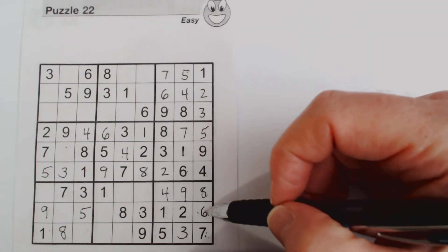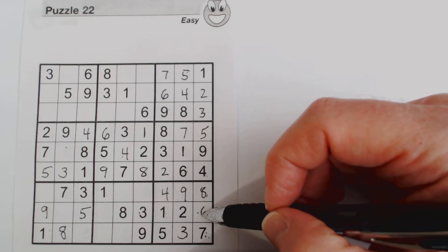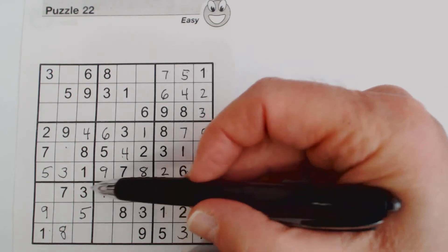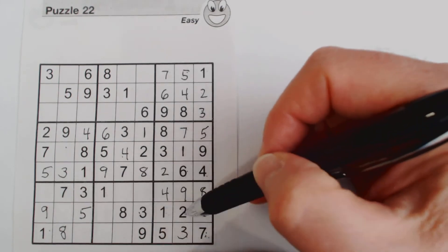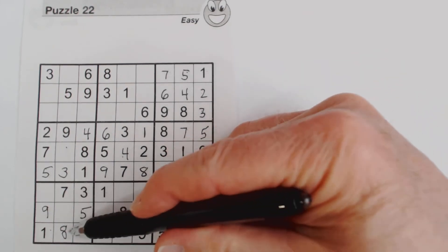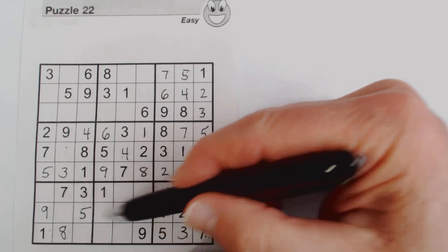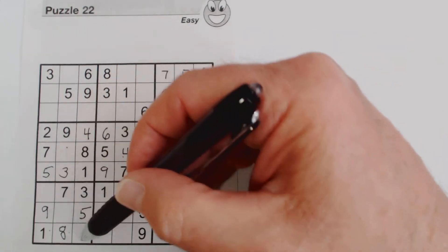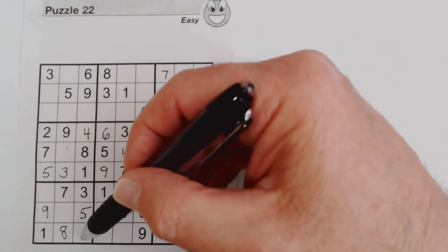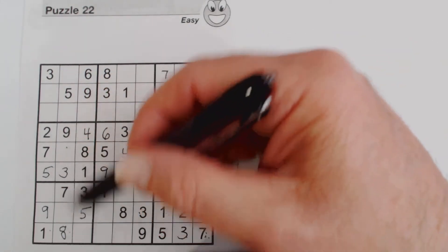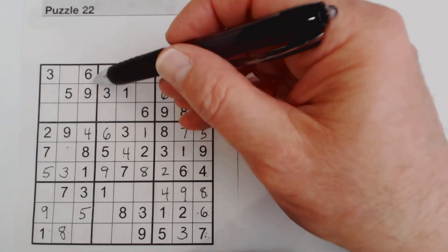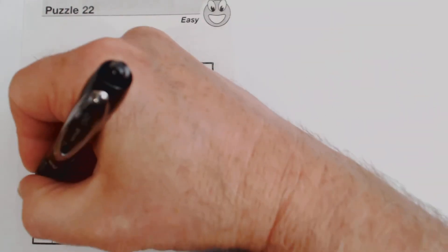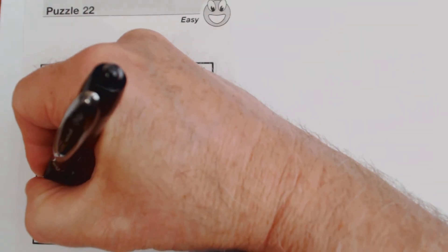Now what are we missing? 1, 2, and 6. Looking at this column: 1, 2, 6, 8, 3 — there's an 8 and 3, plus 1, 2, 6. So we know the remaining two cells are 2 and 6. There's a 2 in one spot and a 6 in another, so we can put a 2 there and a 6 there.